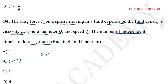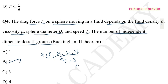The variables are: force, density, viscosity mu, dimension D, and speed — that gives 5 quantities. The question asks for the number of independent dimensionless pi groups. There are 5 quantities, and the fundamental dimensions are M, L, T — that is 3. So the number of pi groups is 5 minus 3, which equals 2. Therefore option B, which is 2, is correct.